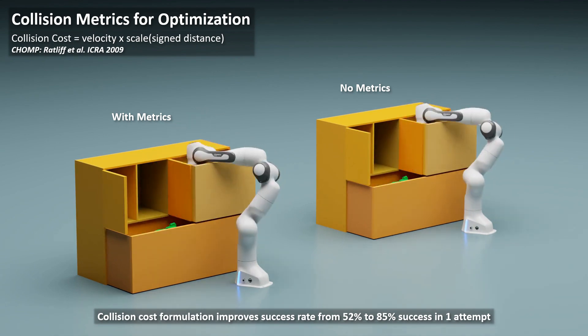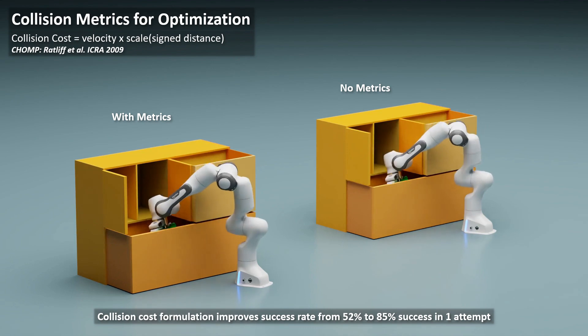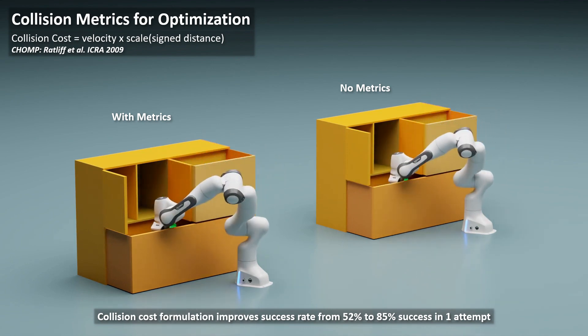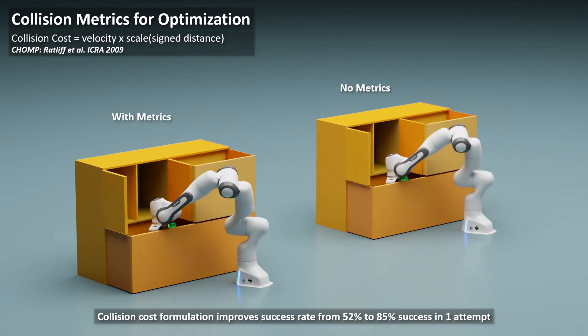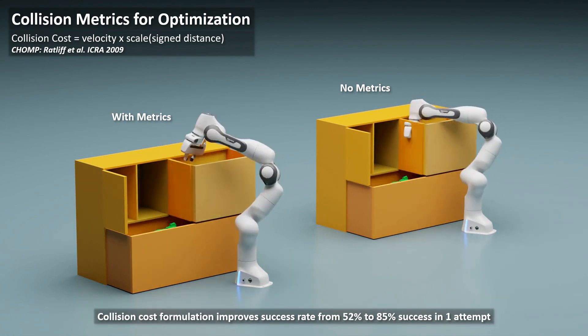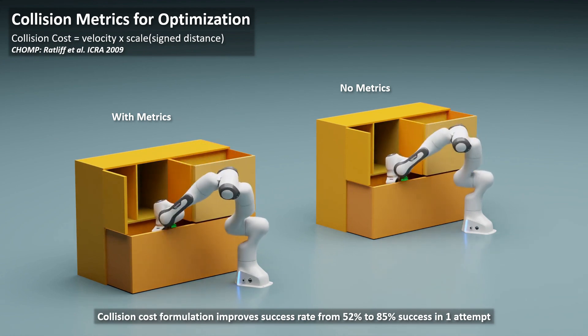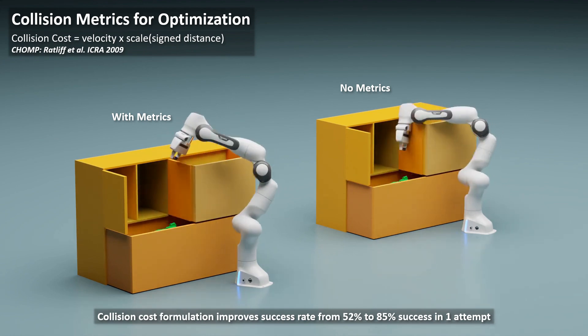On the left, all of Kurobo's collision metrics are activated, while on the right, none of the metrics are activated. You can see here, as the optimization progresses, the collision metrics move the robot away from local minima, while the robot on the right gets stuck and only tries to move very fast near the collision region.